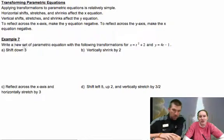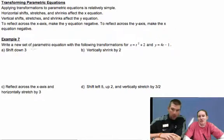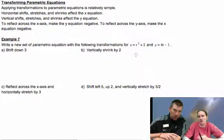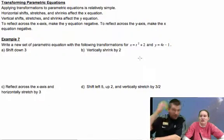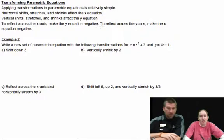So let's try this. For each of these points, we're going to write a new set of parametric equations with the transformations they're describing. And here are our original two equations. So we've got x equals t squared plus 2, y equals 4t minus 1. It should be a parabola.